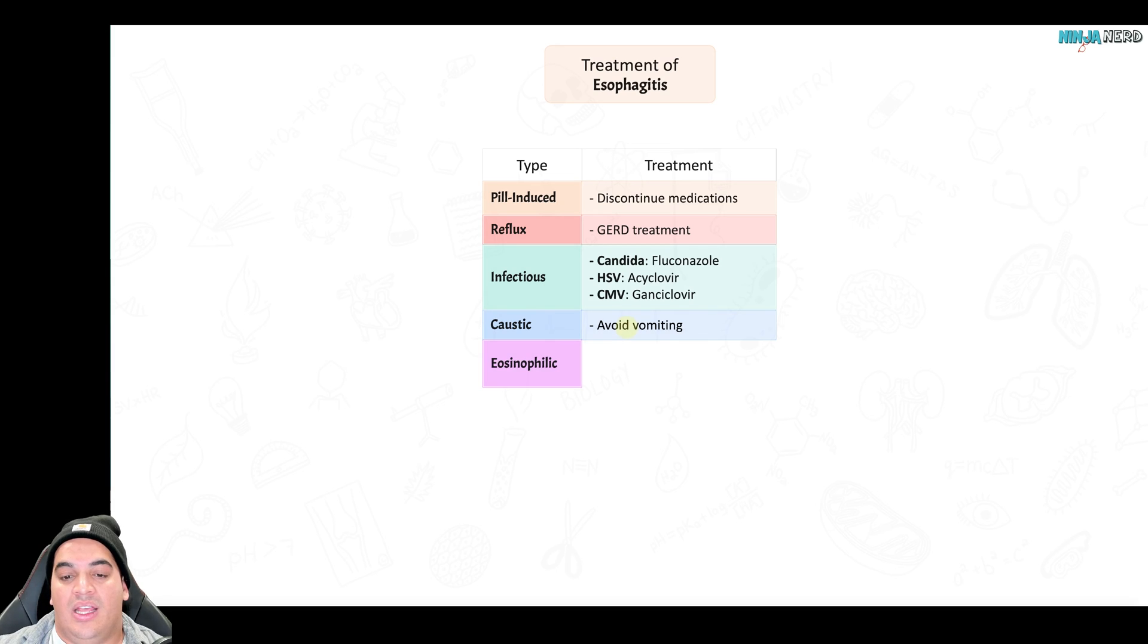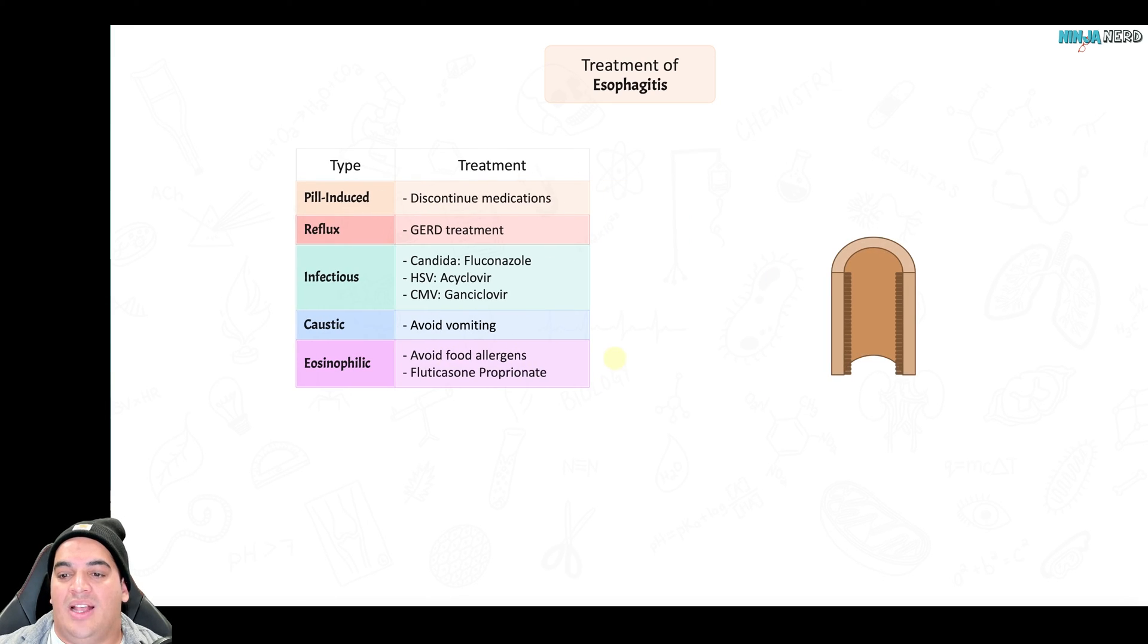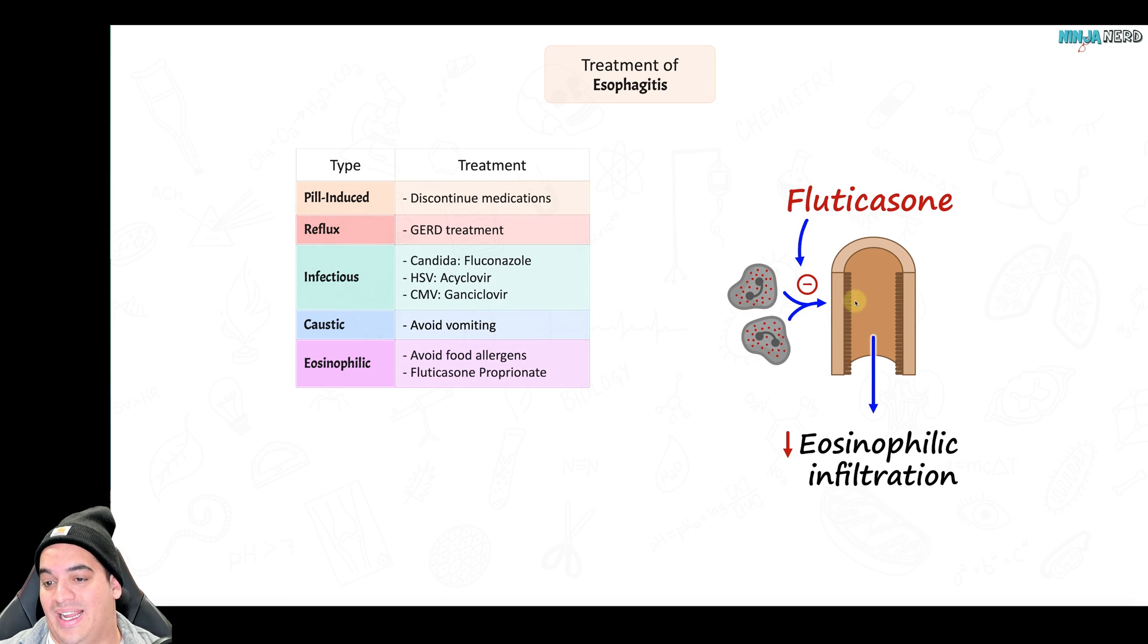Eosinophilic esophagitis is about avoiding the trigger, which is food allergens. But sometimes that's not enough and you gotta shut down those eosinophils. Ways we'll do that is with fluticasone propionate. It's a steroid, and it's not oral, it's actually an inhaled form - it's like a spray that we usually use for patients who have allergic rhinitis. Usually you'll spray it up your nose; in these patients, you'll spray it directly into their mouth, they'll ingest it, and that fluticasone propionate will try to shut down these eosinophils and prevent them from infiltrating into the esophagus and promoting inflammation.